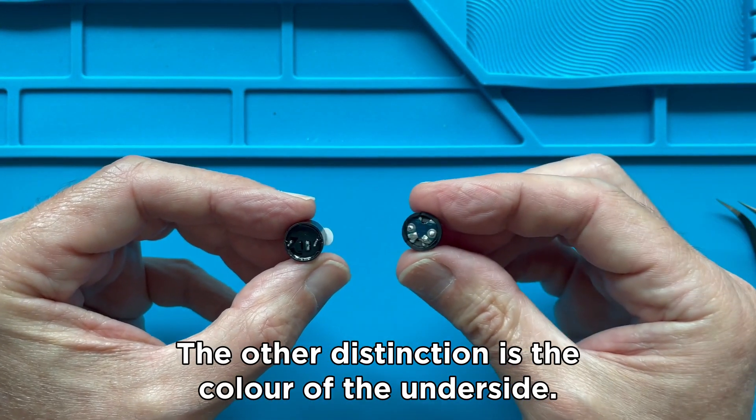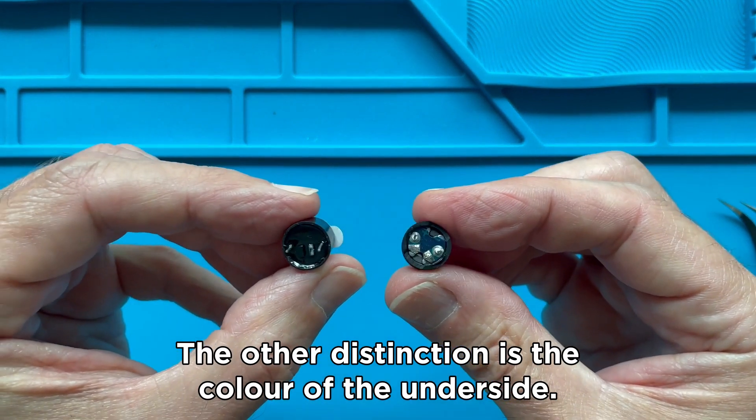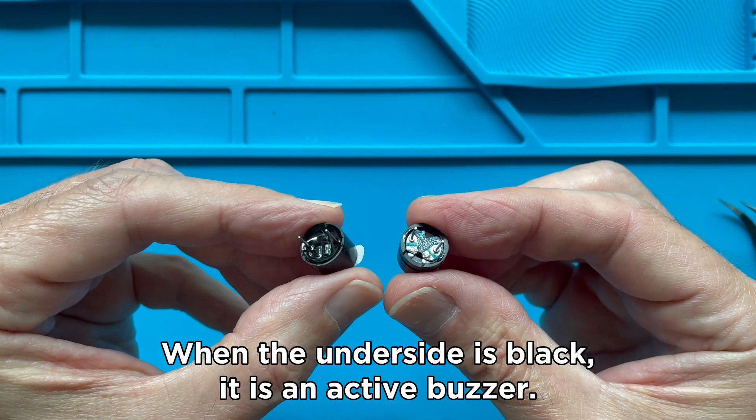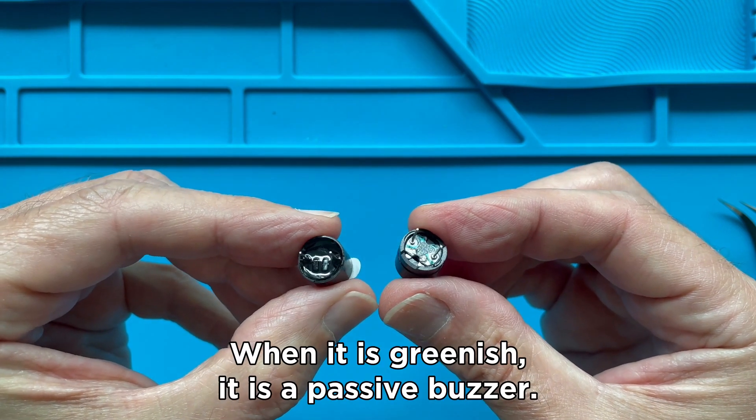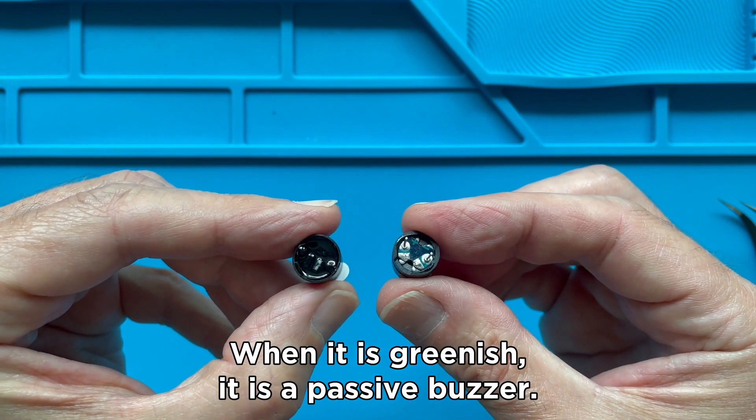The other distinction is the color of the underside. When the underside is black, it is an active buzzer. When it is greenish, it is a passive buzzer.